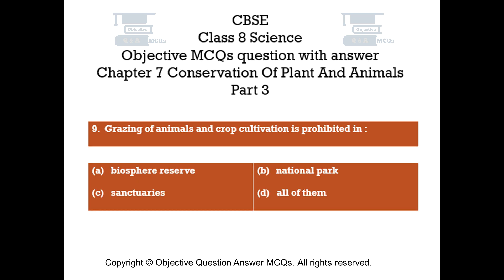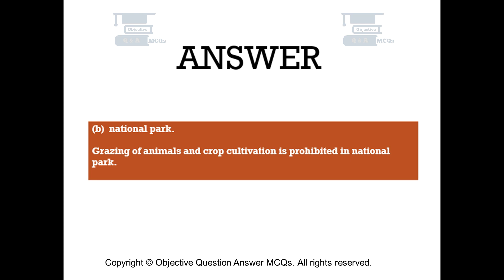Question number 9. Grazing of animals and crop cultivation is prohibited in: Option A - Biosphere Reserve. Option B - National Park. Option C - Sanctuaries. Option D - All of them. The right answer is Option B: National Park. Grazing of animals and crop cultivation is prohibited in National Park.